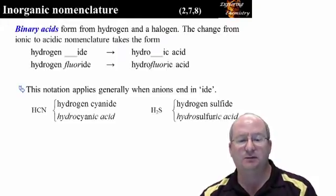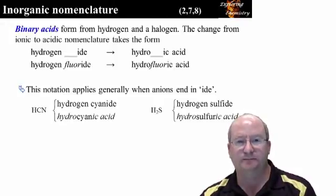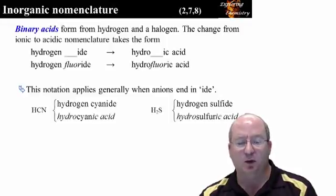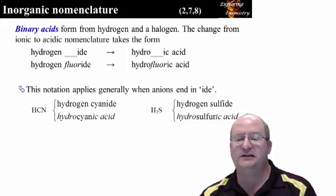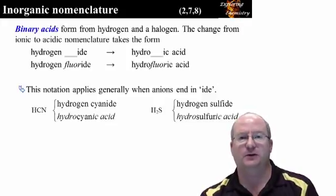This slide reminds you how to change from ionic to acidic nomenclature for binary and related acids. For example, glass is etched with hydrogen fluoride because the fluoride ion is responsible for the etching.